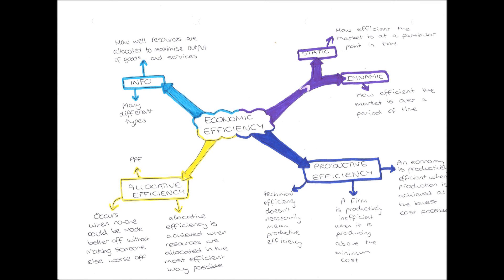Hello everybody and welcome to this microeconomics video on economic efficiency. Our overall definition of economic efficiency is this: economic efficiency is how well resources are allocated in order to maximize the output of goods and services in the economy. The key point is to maximize output — the most efficient economy is the one which has the greatest output or production of goods and services.